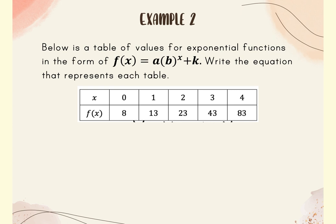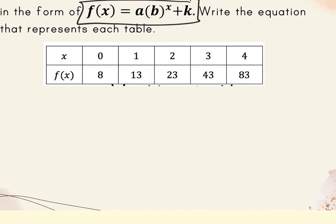This problem shows a table of values for exponential functions in the form f(x) = a times b to the x plus k. This is the systems of equations version. Write the equation that represents the table.